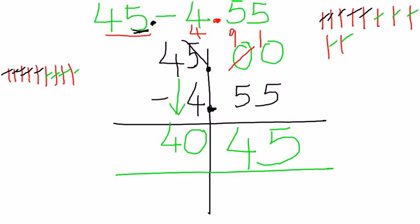So the answer for 45 minus 4.55 is 40. Are we forgetting something? Yes. Our fish ball on the stick, right? 40.45.